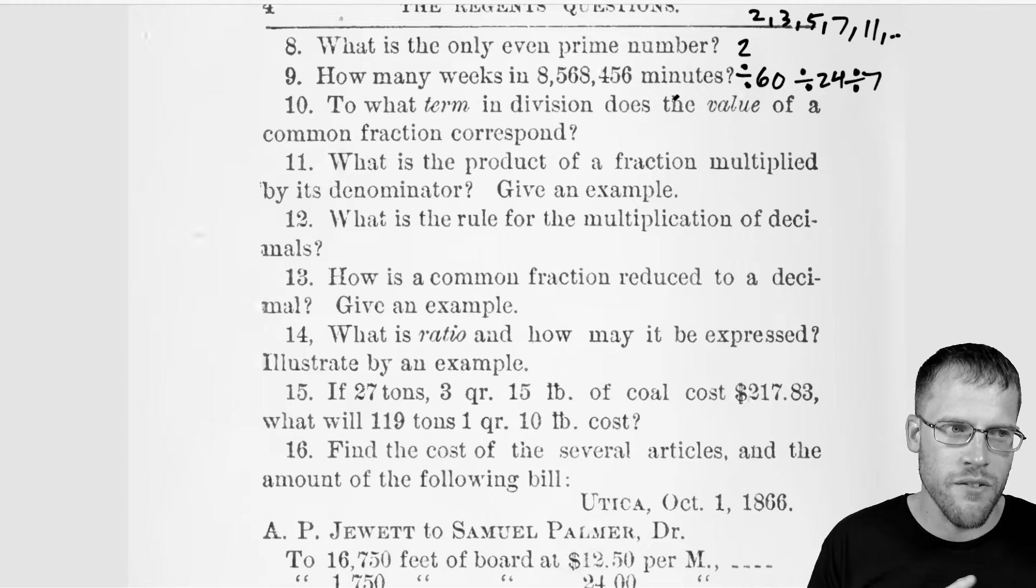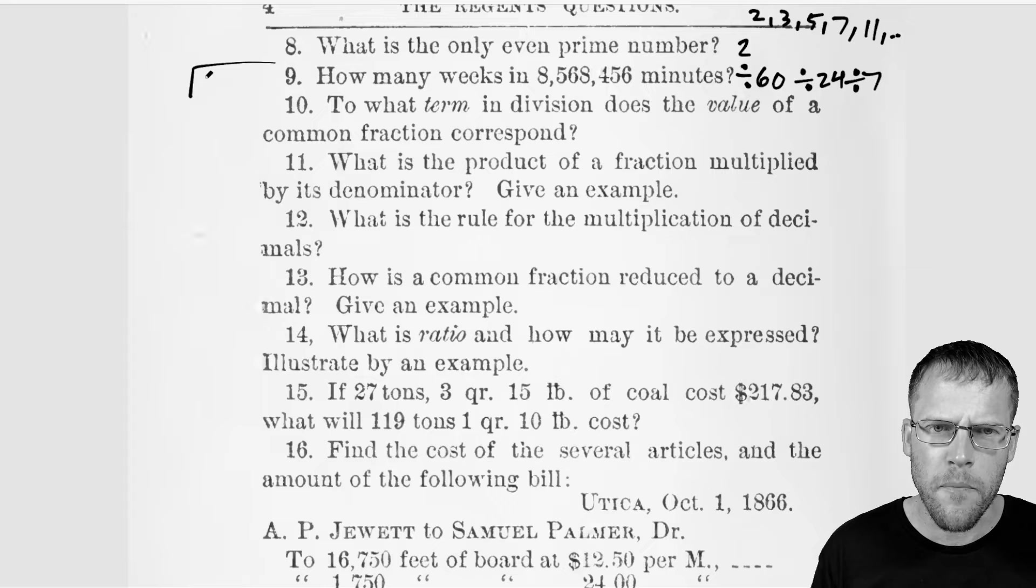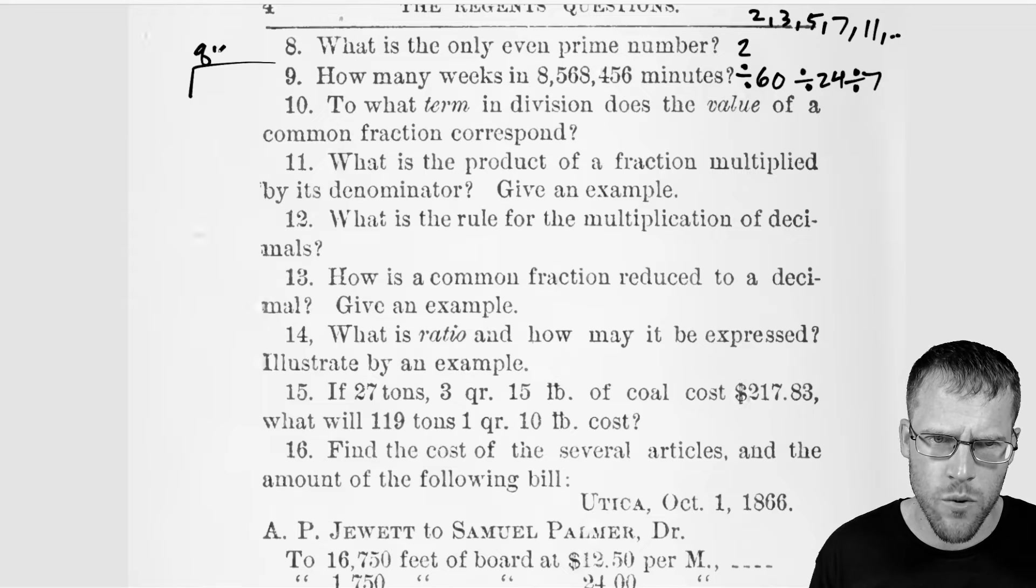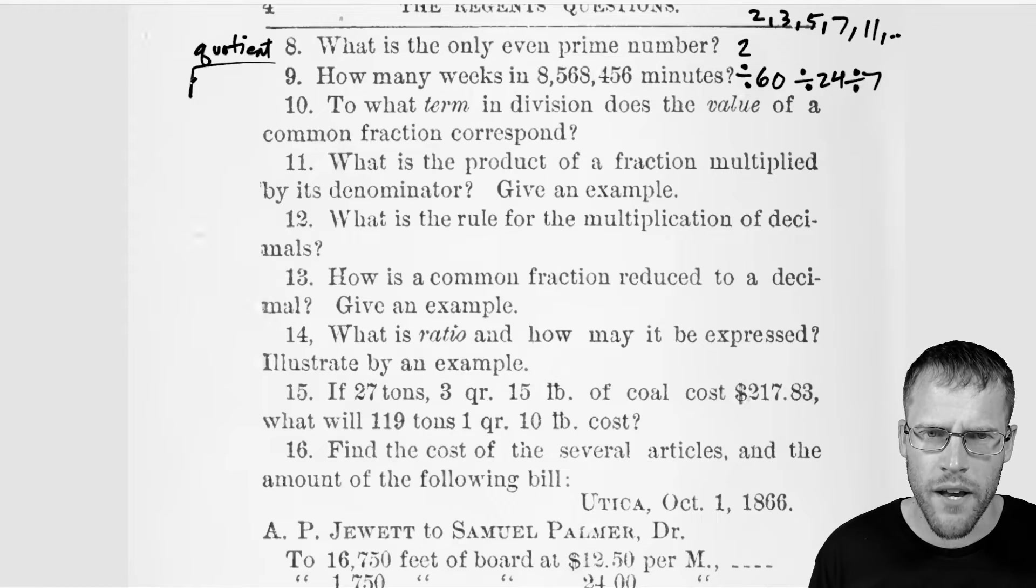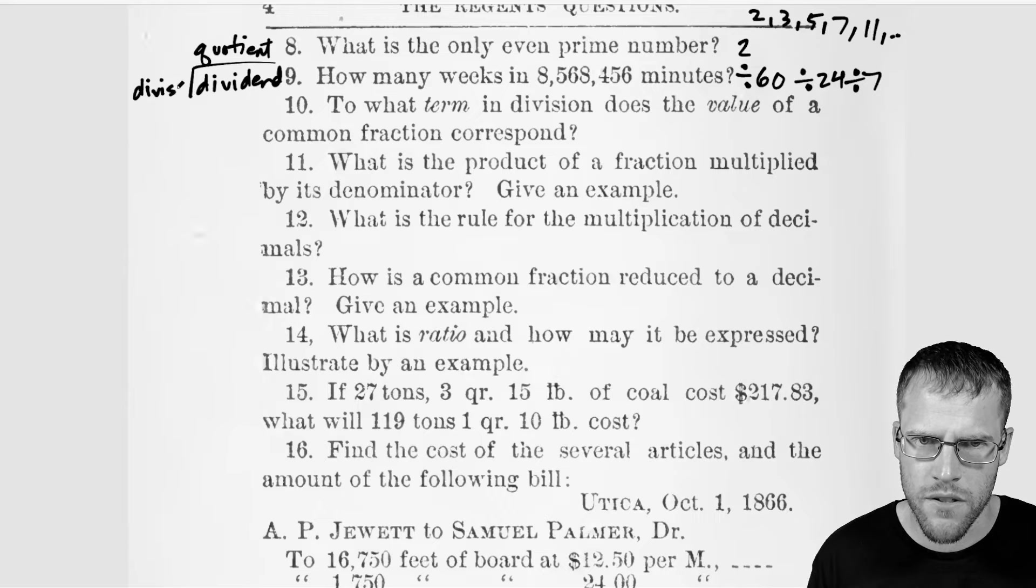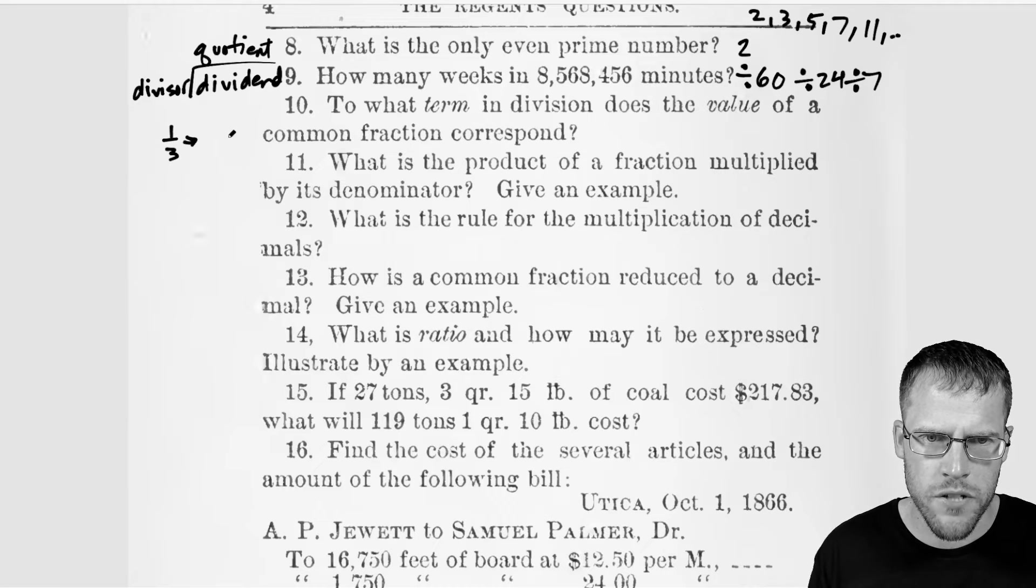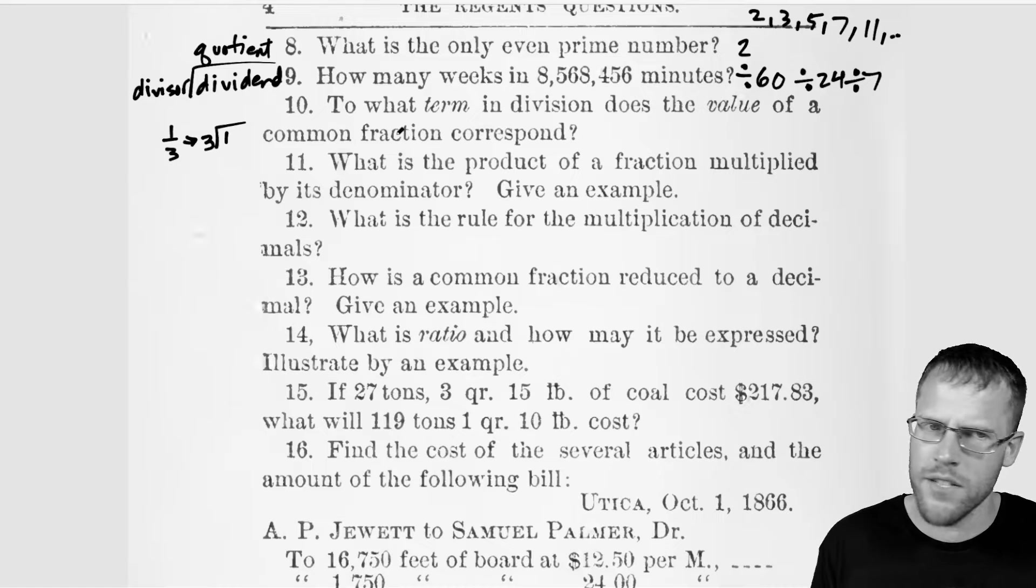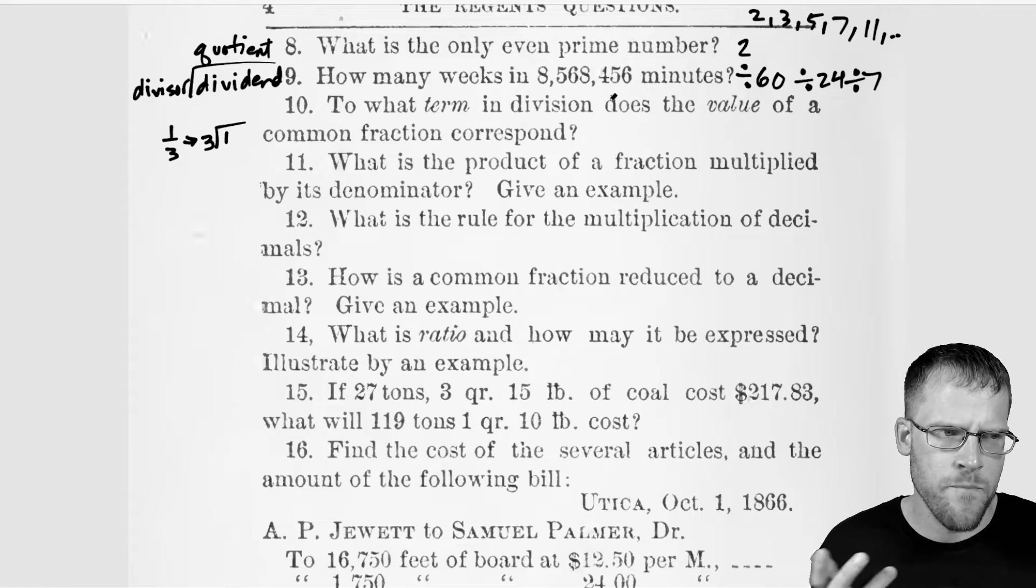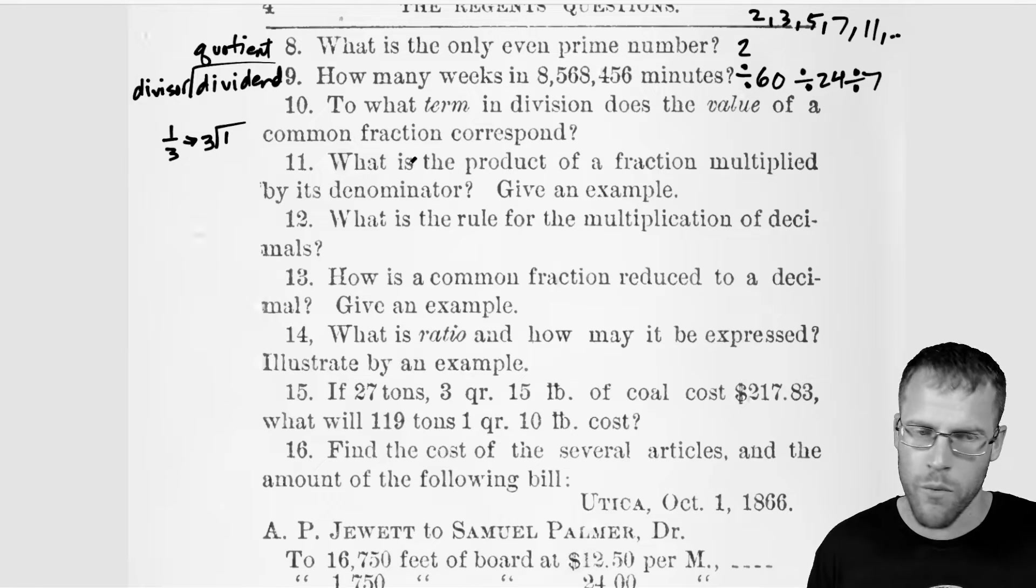Okay, so to what term in division does the value of a common fraction correspond? So anytime I think of division, I think of what we have here. Up top is the quotient. So this is the quotient. What we have inside here is the dividend. So this is the thing that we're dividing into. And then in front, you have the divisor. Okay, so the divisor. So if you have some common fraction, like one over three, this corresponds to one divided by three. So I guess the result of this would be the quotient. But this is really just a vocab question here. And yeah, so know your vocabulary. This is not necessarily the answer. But that's the sense I'm getting when we first look at this.